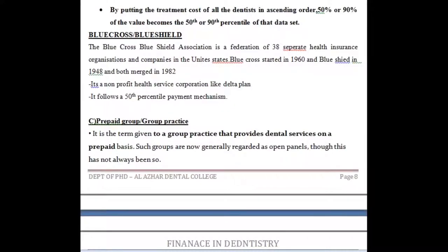Blue Cross Blue Shield is also a non-profit organization. It is an association or federation of 38 separate health insurance organizations and companies in the United States. Blue Cross started in 1948 and Blue Shield in 1960, and both merged in 1982. It is a non-profit health service corporation like the Delta Dental Plan and follows the 50th percentile mechanism.